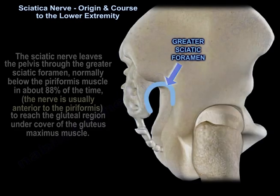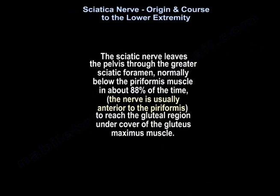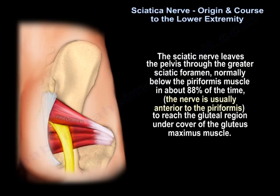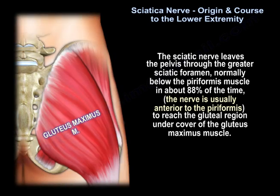The sciatic nerve leaves the pelvis through the greater sciatic foramen, normally below the piriformis muscle in about 88% of the time, and it is usually anterior to it. It will then reach the gluteal region under cover of the gluteus maximus muscle.